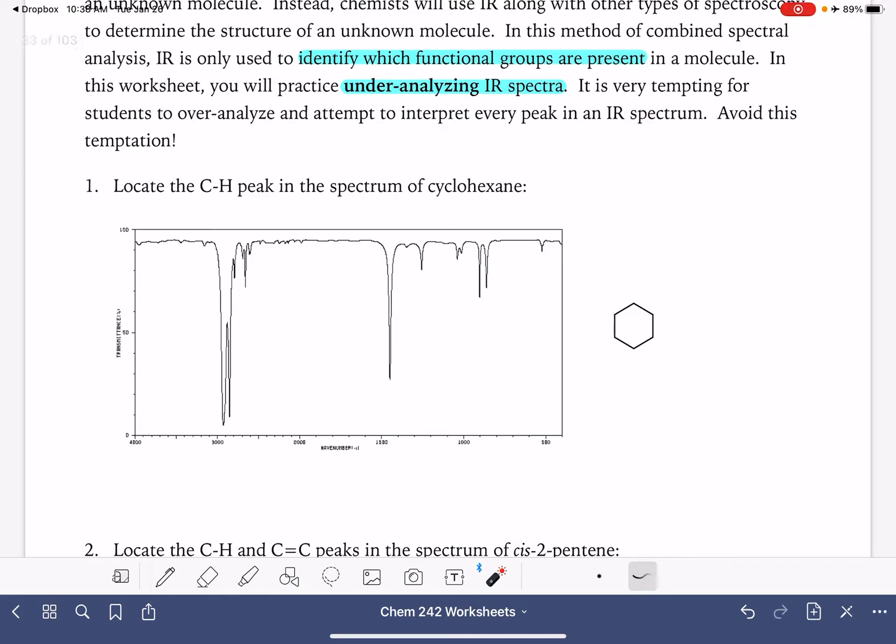So this is the IR spectrum of cyclohexane. Here's the cyclohexane molecule, and all that we're going to do for the cyclohexane molecule, because it does not have any functional groups present, we don't expect to see a lot of stuff in the IR spectrum and we don't. It's pretty basic. And we just want to locate the presence of the carbon hydrogen peaks. Carbon hydrogen peaks are ones that you should always get used to seeing because they're pretty much always present in all of our molecules located around 3000 wave numbers.